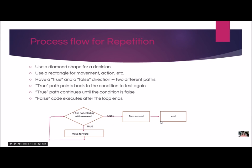Let's also remember what the process flow looks like for repetition. Process flow is a visual representation of what's going on, and we use particular symbols to represent different things. We have a diamond to represent a condition — if statements have conditions and loops also have conditions. So I've got a diamond here, I've got two branches: true and false.